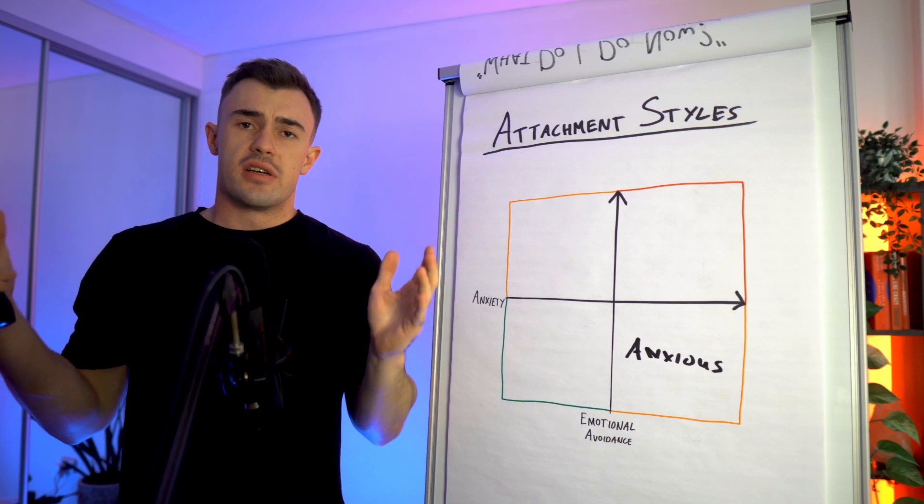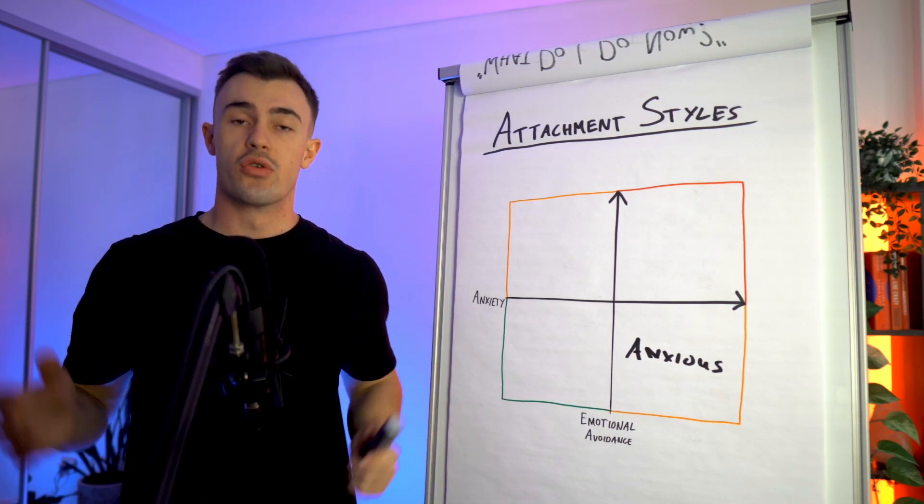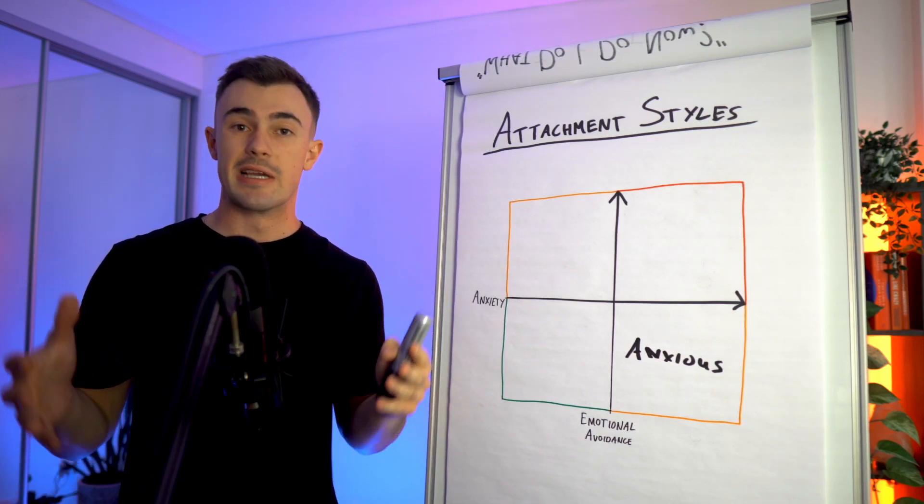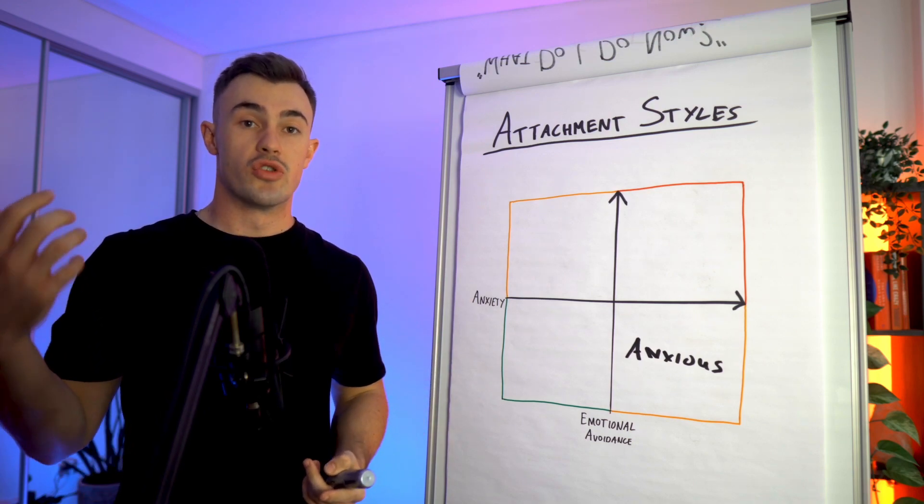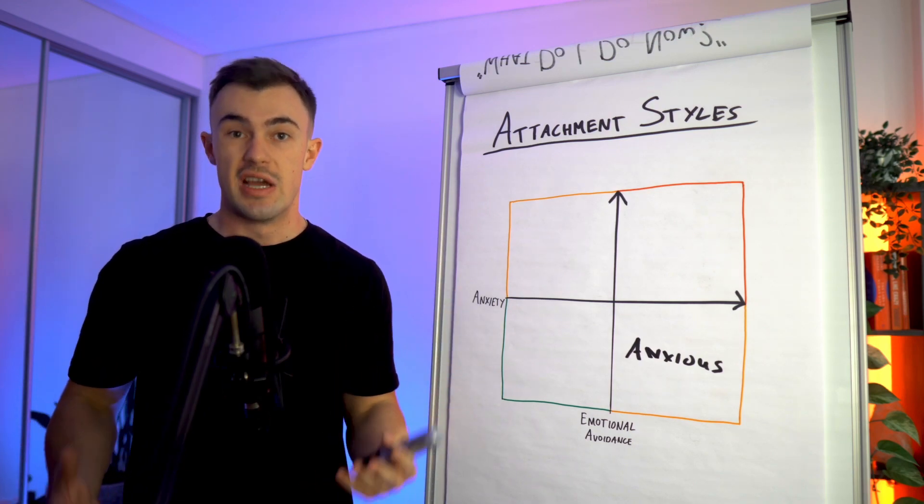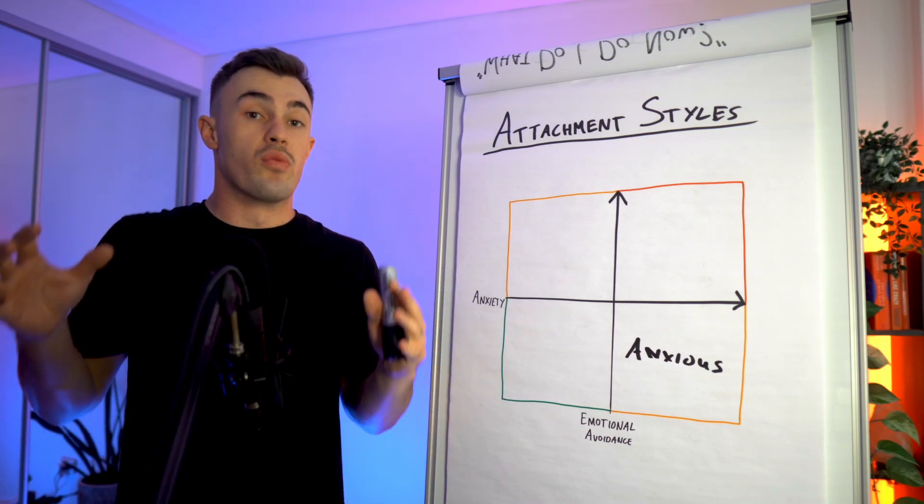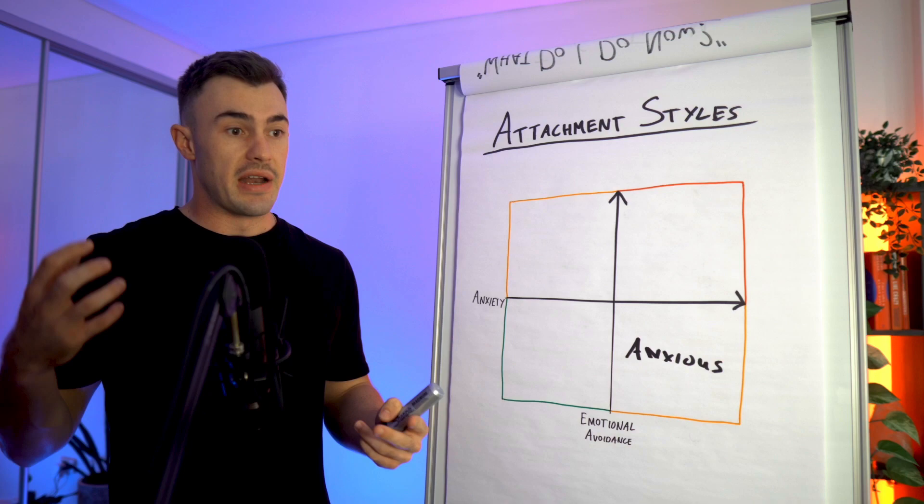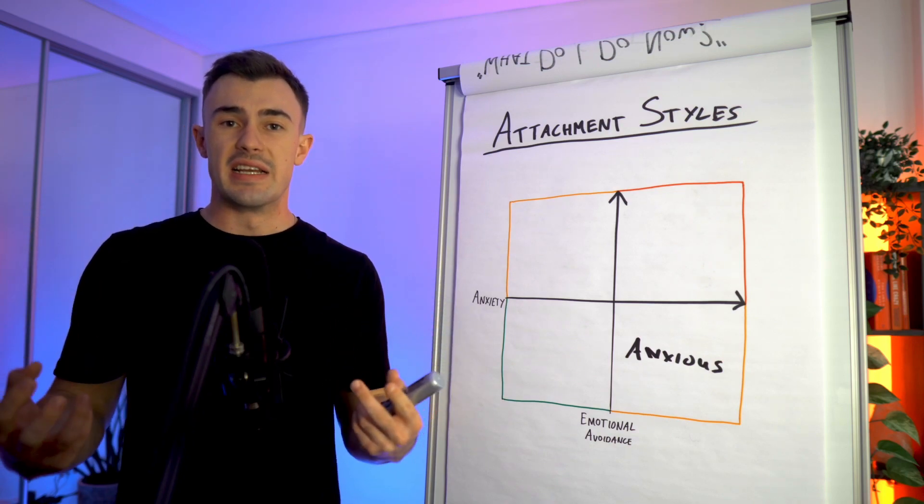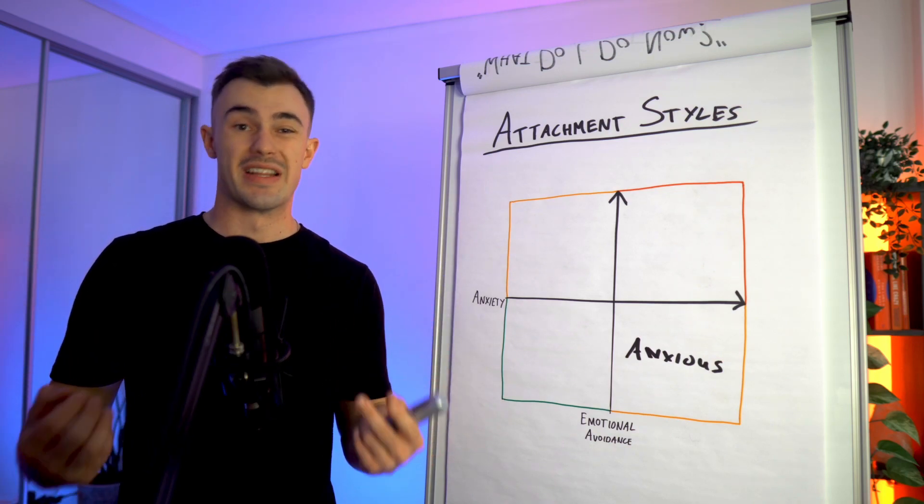So anxious attachment style types grew up with parents who were extremely coddling. So they gave them too much attention, too much affection. They didn't give them a lot of freedom and as a result they've developed this relationship with relationships that they're always really needing that reassurance and that comfort and that security.